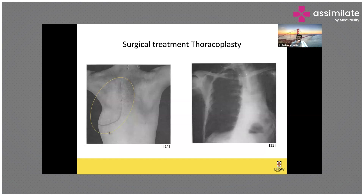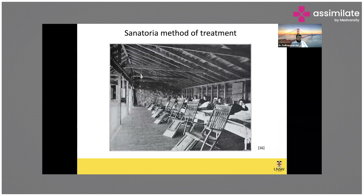Let's look at some of the treatment strategies. Before drugs were introduced, medical treatment involved literally resecting a portion of the lung — that's called thoracoplasty. Then came the sanatoria method, where people were placed in TB sanatoria and asked to stay for six months, nine months, or a year, given medications, and taken to windows where fresh air comes in.